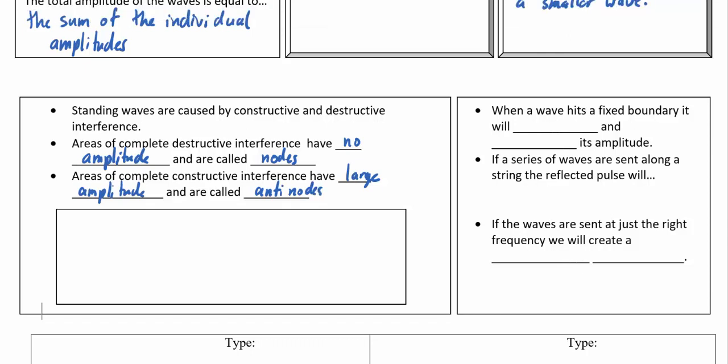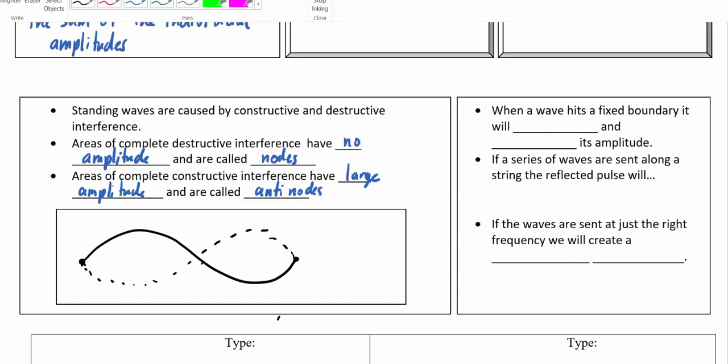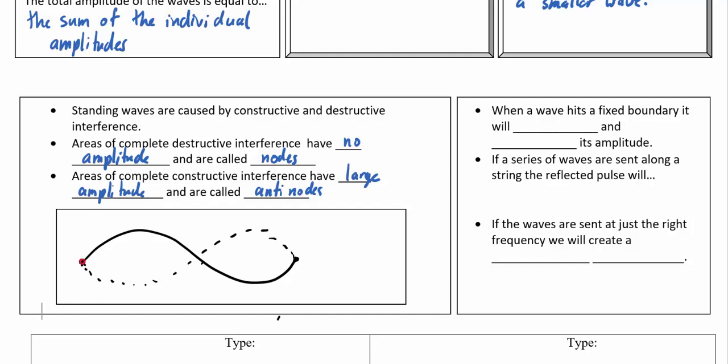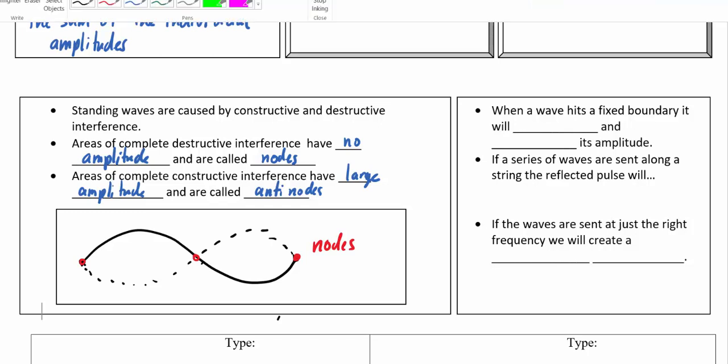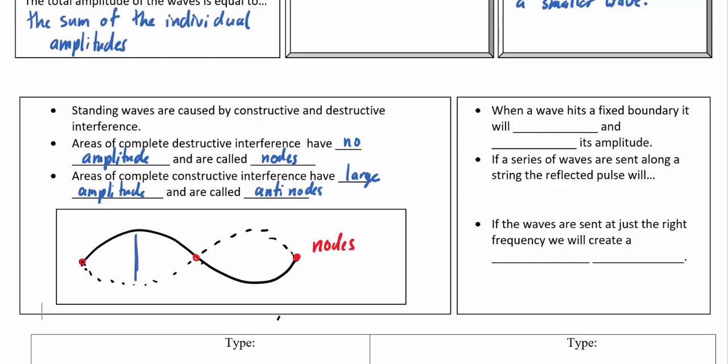If we were to draw that simple waveform like we saw there, where it goes up and down and back, and then it goes back and forth like this, we can see that this would have specifically three nodes, one, two, three areas where the amplitude would be effectively zero, whereas it would have two regions here and here, which would be our antinodes.